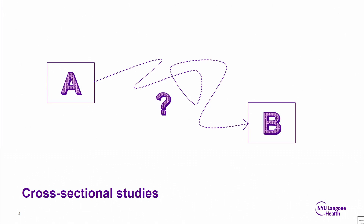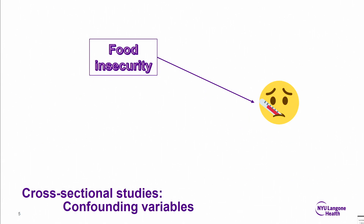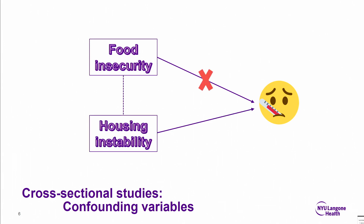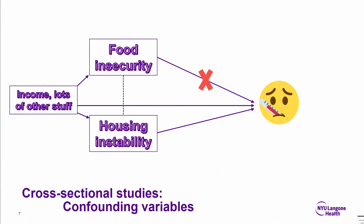Most of the studies we have on social needs in healthcare still remain cross-sectional, and there are a number of challenges to that. One that I've been thinking about a lot lately is around confounding variables, especially because we know that these social needs often travel together and often have common upstream precipitants. Just to give an example — and this is nothing against food insecurity, this is just for illustration — say you do a cross-sectional study and you find that food insecurity is associated with bad health, but what if really it's just that food insecurity happens to travel along with housing instability, and it's actually the housing instability that's related to the bad health, but the authors didn't adequately adjust for that? Or maybe it's some upstream, undefined factor that's actually related to the bad health.